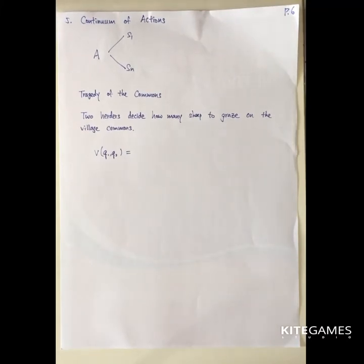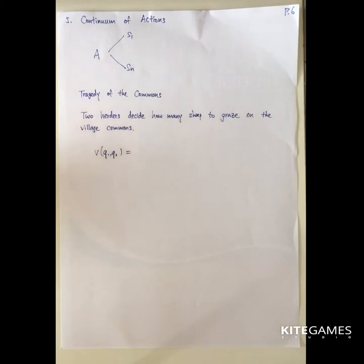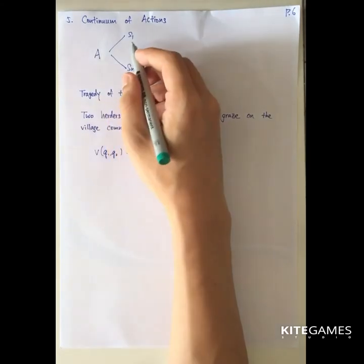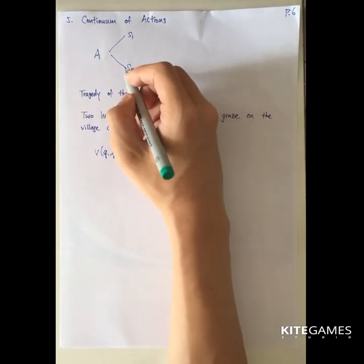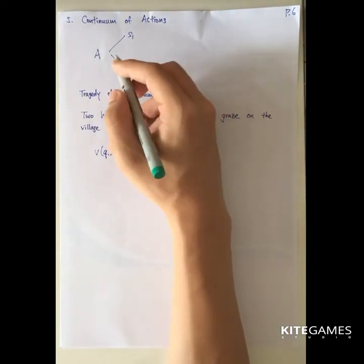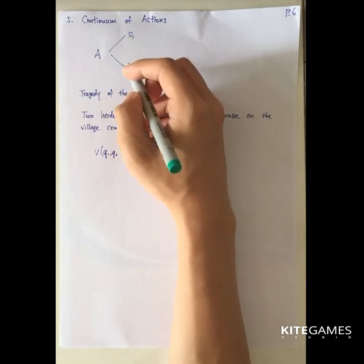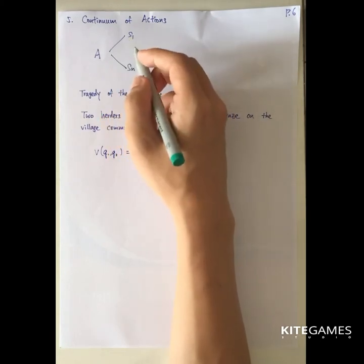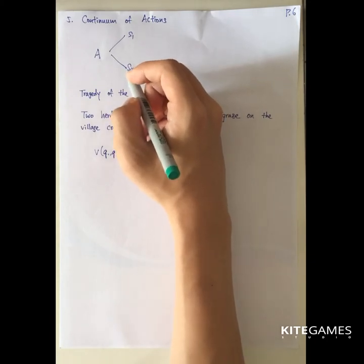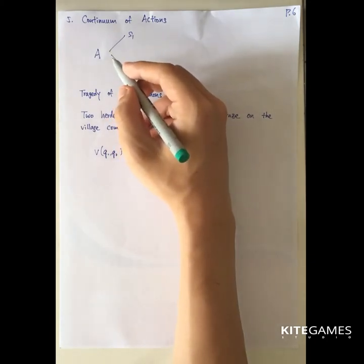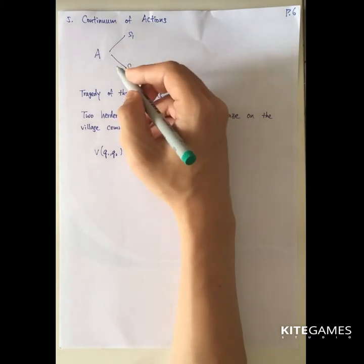Next, we'll talk about the continuum of actions. Before this sub-chapter, we have learned that person A can have two strategies, maybe S1 and SN. For the penalty shootout, either left or to the right, and the prisoner's dilemma, either defect or silent. But in reality, the choice does not confine to two actions.